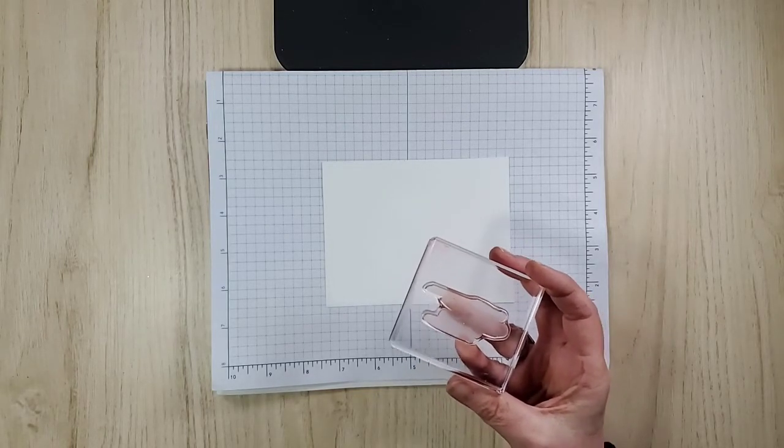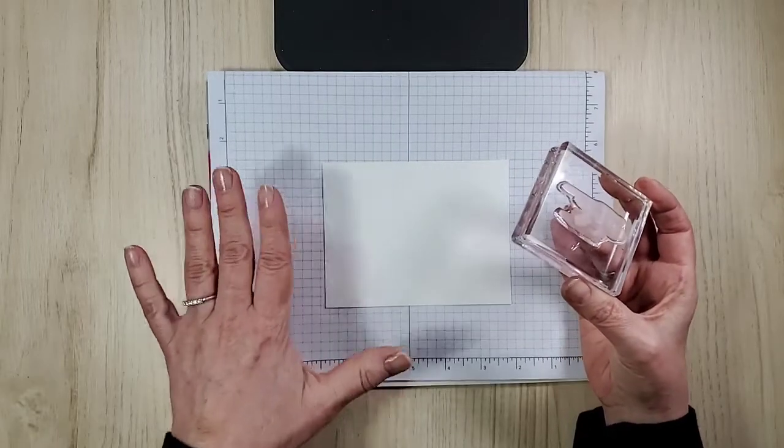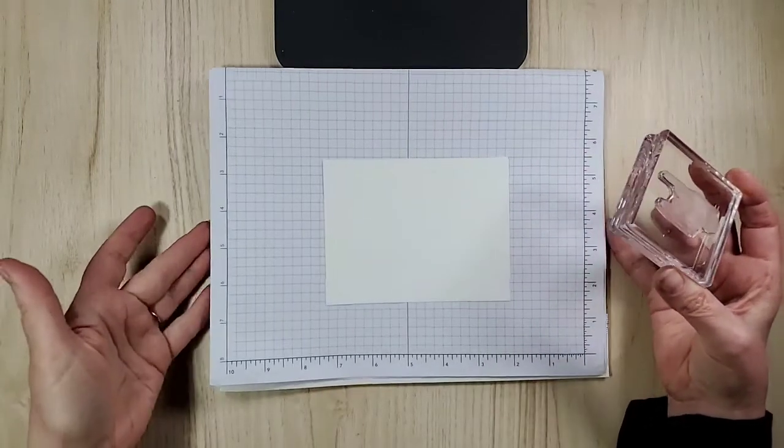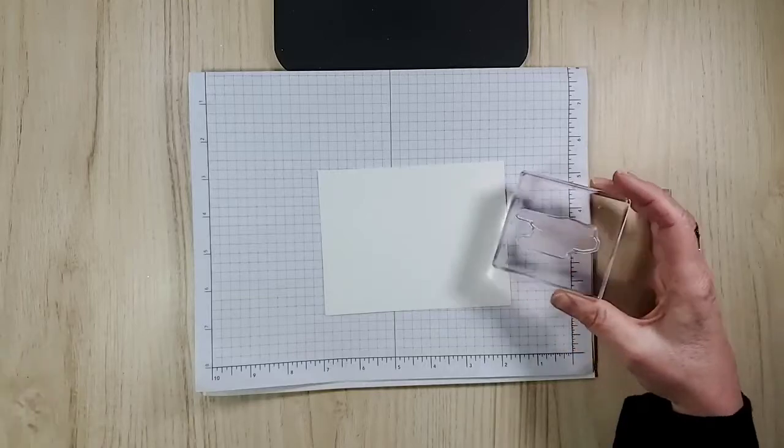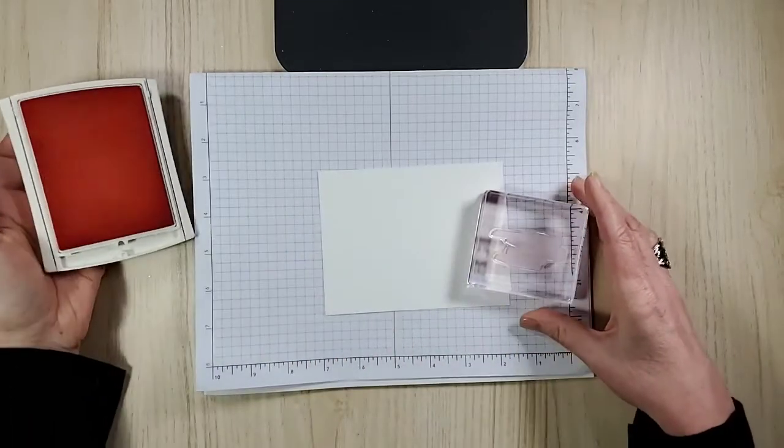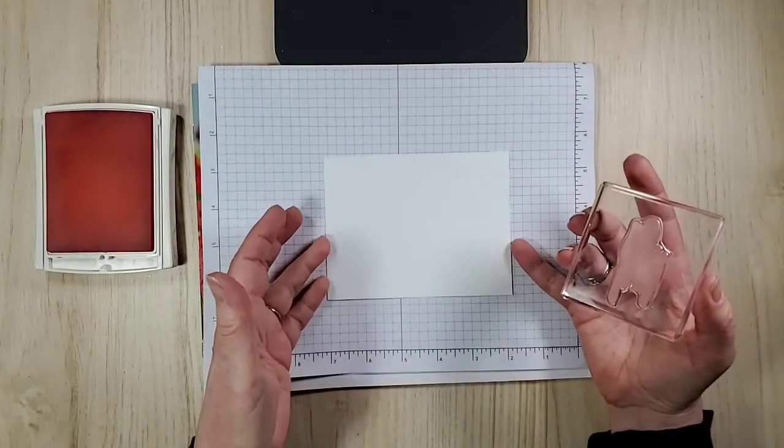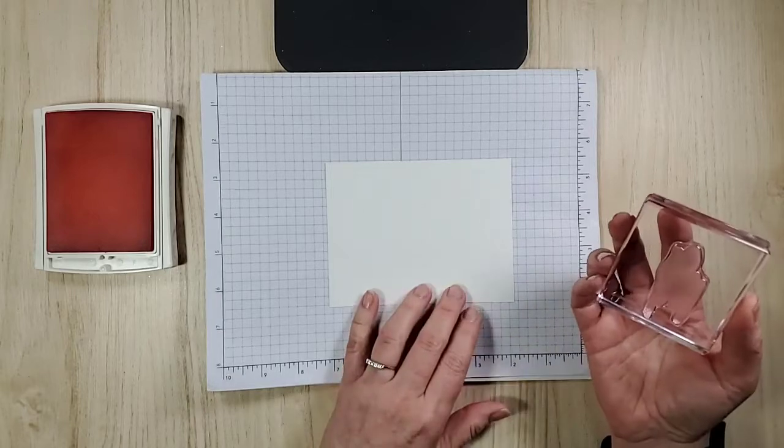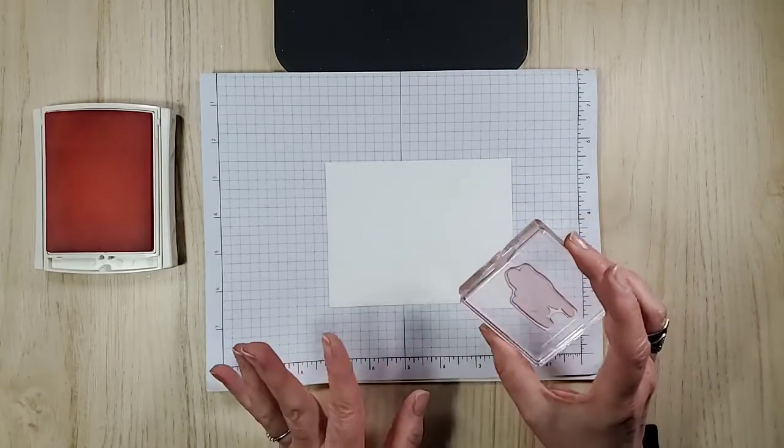This is one of the stamps from My Meadow. When you're using photopolymer, you want to put some kind of cushion underneath. You can use catalog and some grid paper, absolutely fine. We also have the paper piercing mat. First things first, this is Flirty Flamingo. And I'm just going to ink this up. A couple different ways you can do this. I don't have my watercolor paper yet that I just ordered.